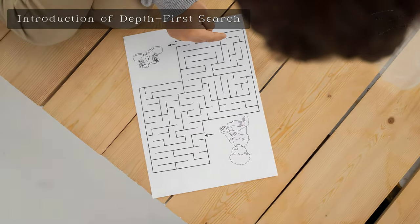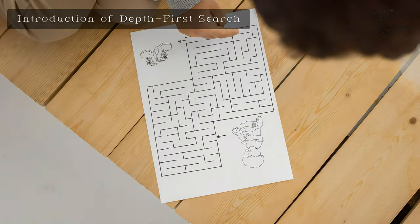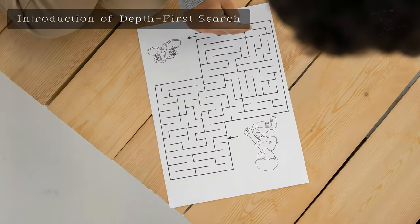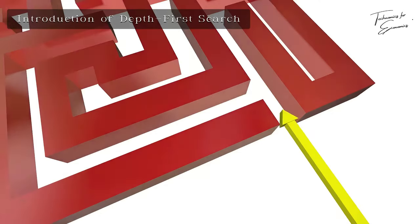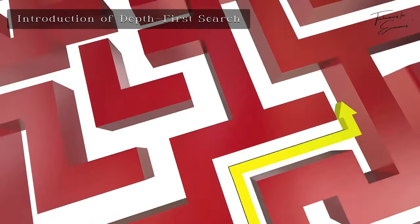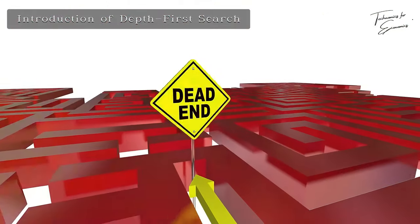It uses a stack to keep track of the path, diving deep into each branch before backtracking. Starting from the root node, DFS explores as far as possible along each branch before retracing steps.